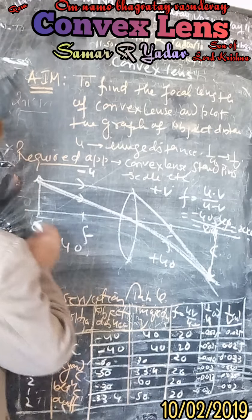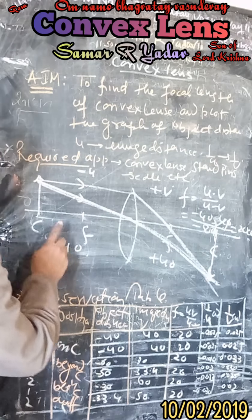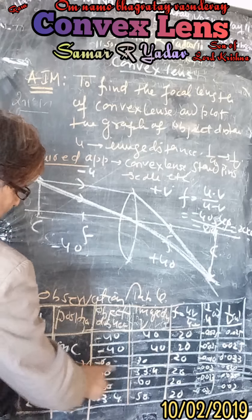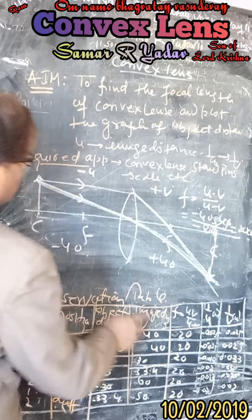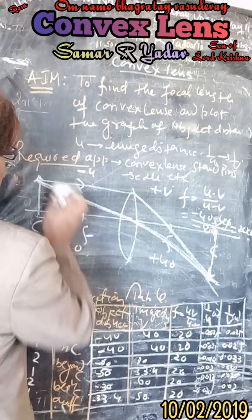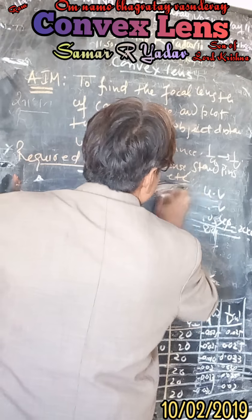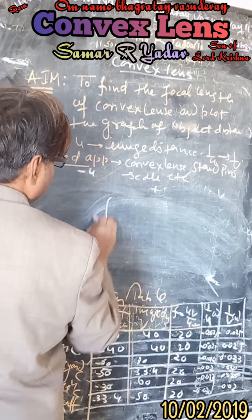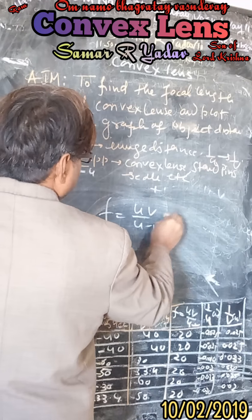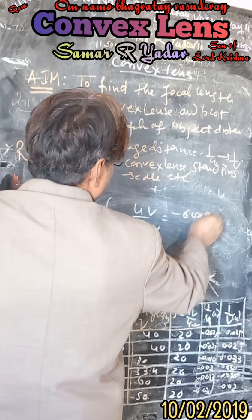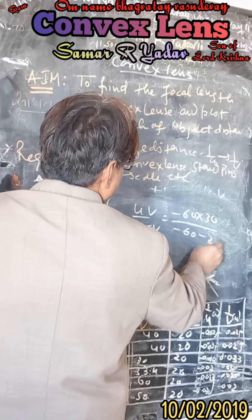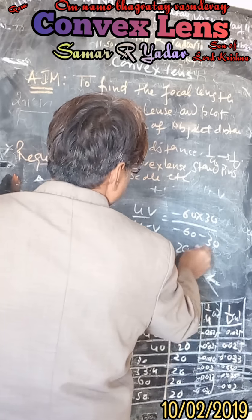Similarly, if the object is kept beyond C, say at 60 cm, then the image is formed between F and C at 30 cm. Using the formula: F = (−60 × 30) / (−60 − 30) = −1800 / −90 = 20 cm. So again we get the focal length as 20 cm.